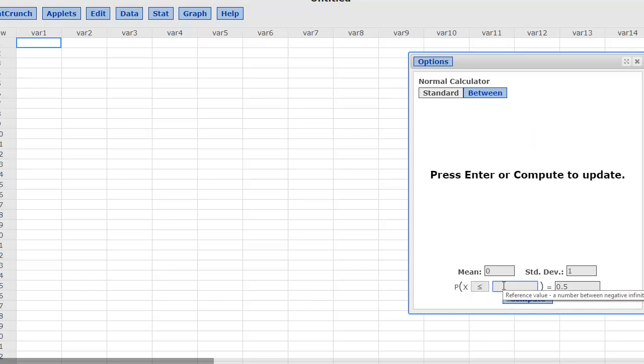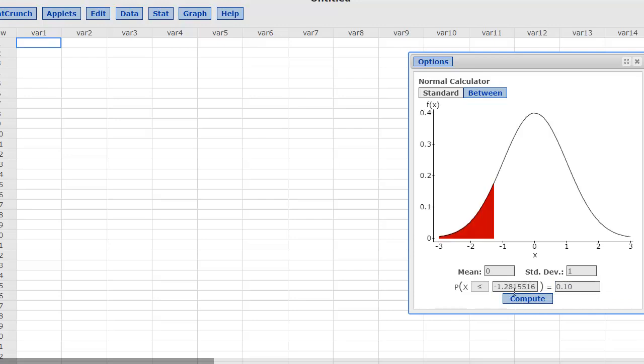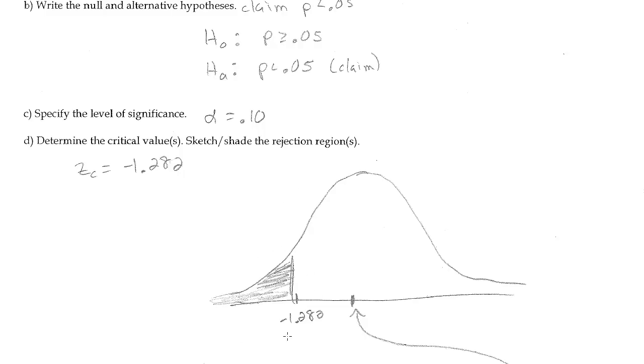I'm looking for this z value, so I'm going to leave that blank. And it was 0.10 all in the left-tail. So when they compute, there's a negative 1.28 that we see in the left-tail. So there's our critical value.